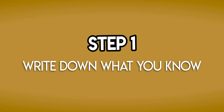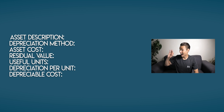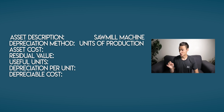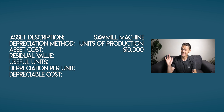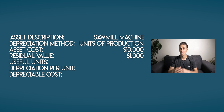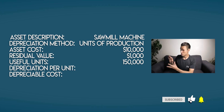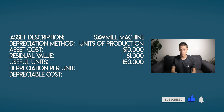Step 1: Write down what you know. Your asset is a sawmill machine and we're going to use the units of production method of depreciation. The asset cost is $10,000. Its residual value is $1,000, and we expect it to be useful for 150,000 units. We'll calculate the depreciation per unit and depreciable cost in step 3.